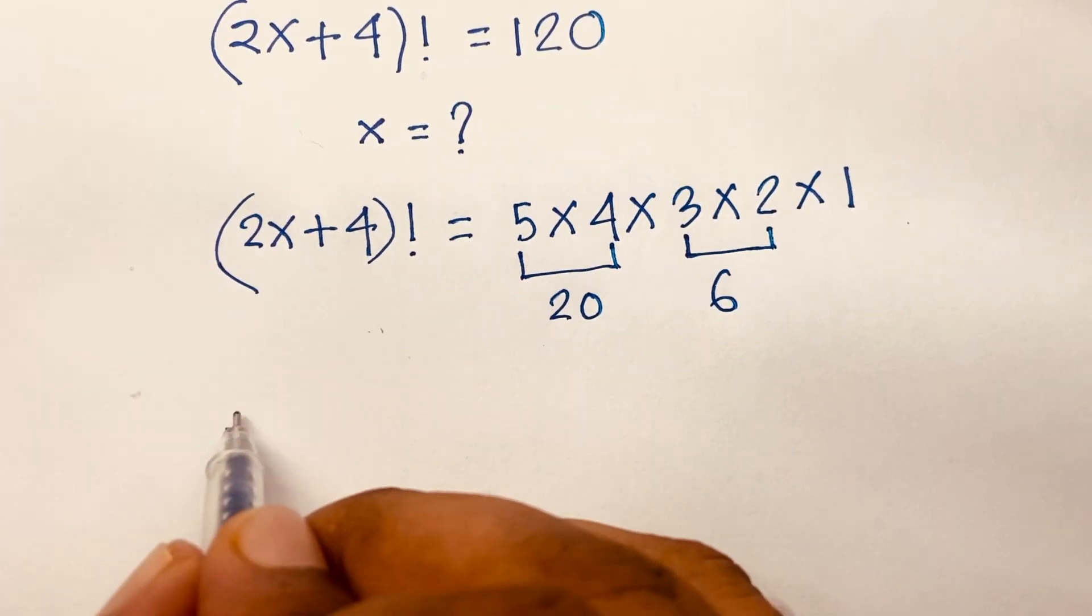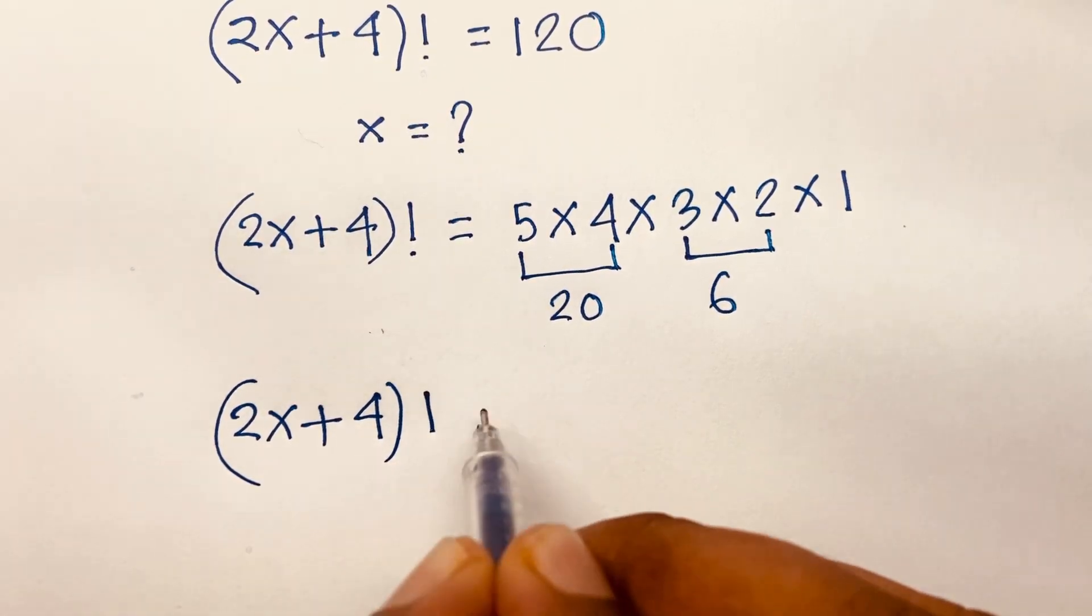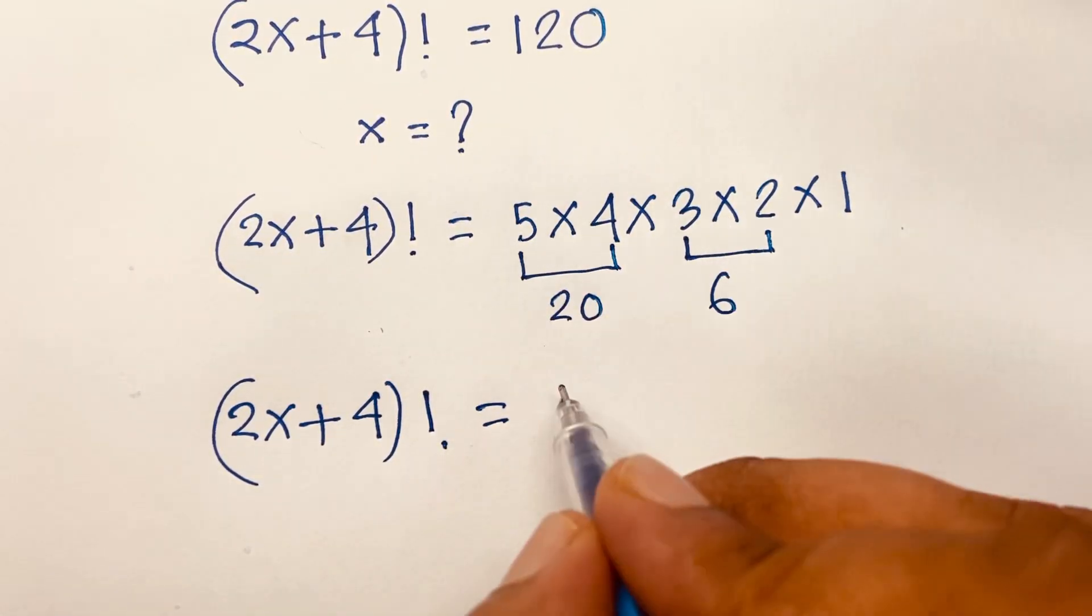Then I can see (2x+4)! equals 5 factorial.